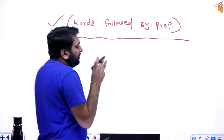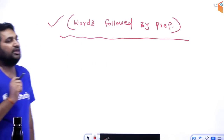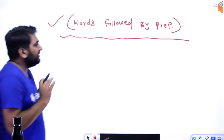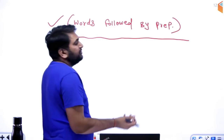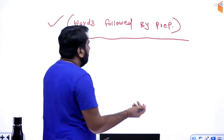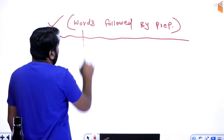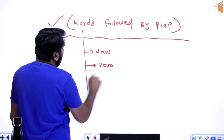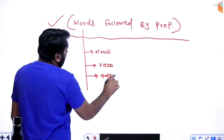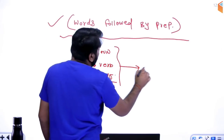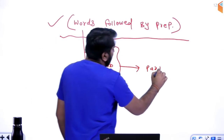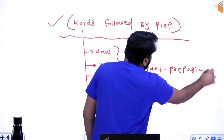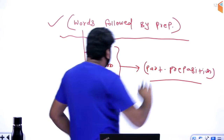Jab bhi ek koi particular word hota hai, woh basically apne saath mein particular context mein ek particular preposition leta hai. Dhyan rakhna. Yeh jo words hote hain, inki alag-alag category ho sakti hai — ya noun ho sakti hai, ya verb ho sakti hai, ya adjective bhi ho sakti hai. In ke baad mein basically ek particular context mein hum ek particular preposition ka prayog karte hain. Isse hum English language mein bolte hain 'words followed by preposition,' jisse 'fix preposition' bhi bol diya jaata hai.